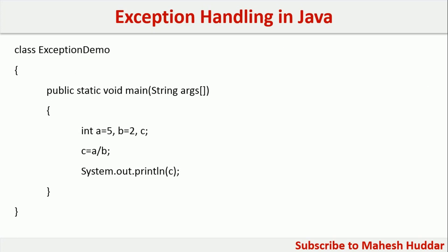In this particular fragment of code, I have created a class called ExceptionDemo. Within this, I have added a main method. I have defined two variables: a is equal to 5 and b is equal to 2. I have created another variable called c — all three variables are of type integer. I have calculated the value of c as a divided by b, and then I have printed the value of c.